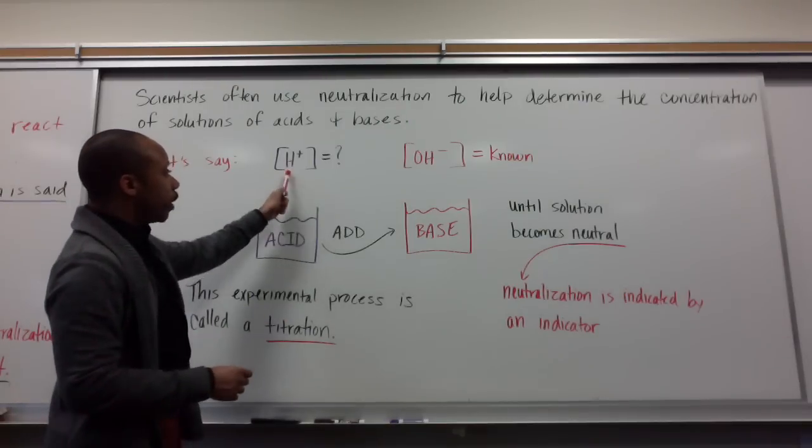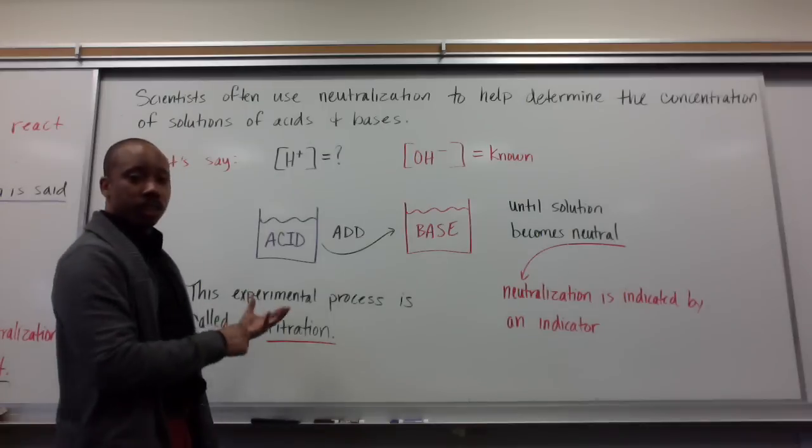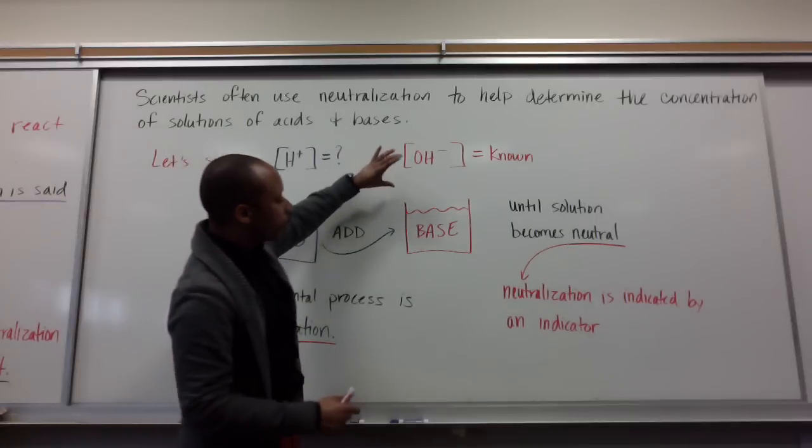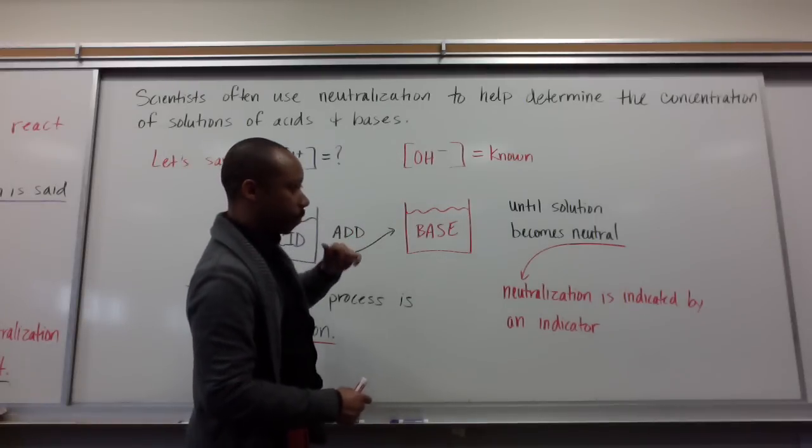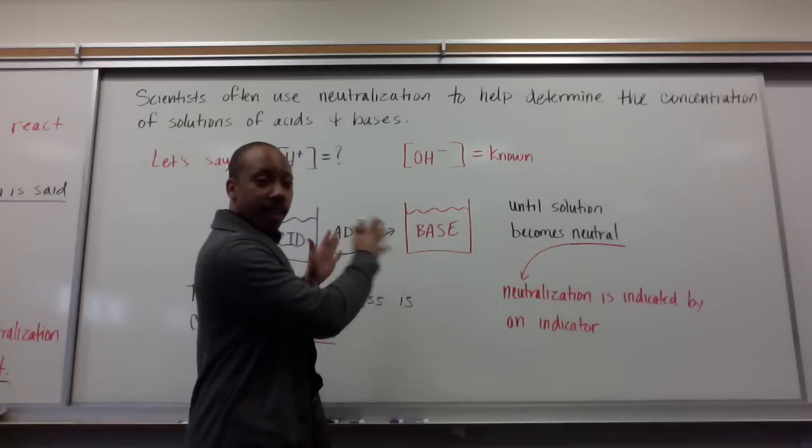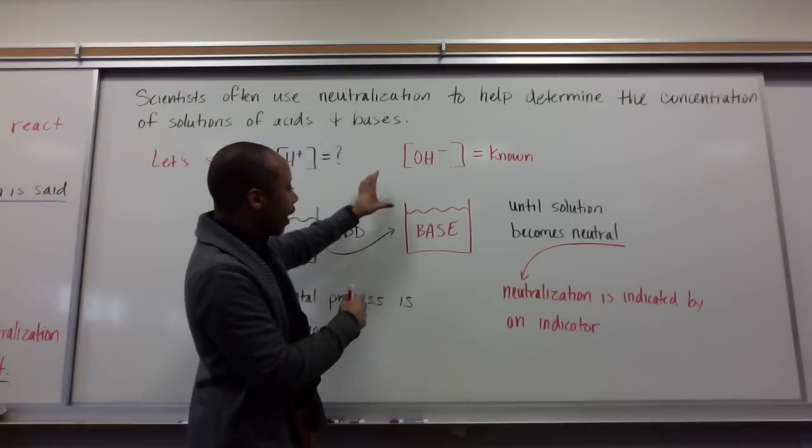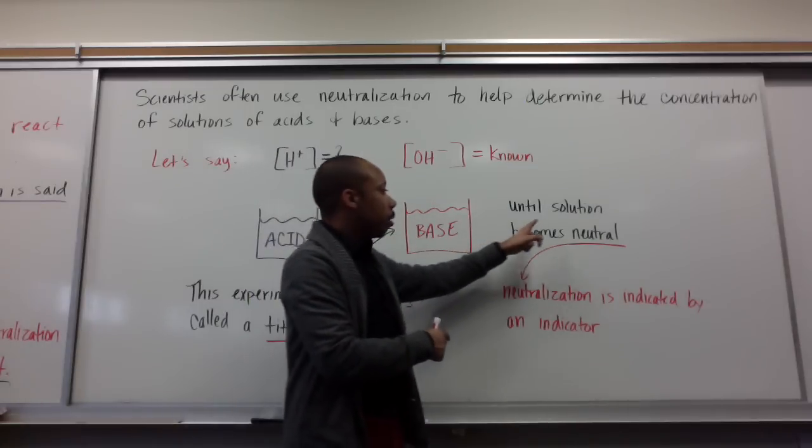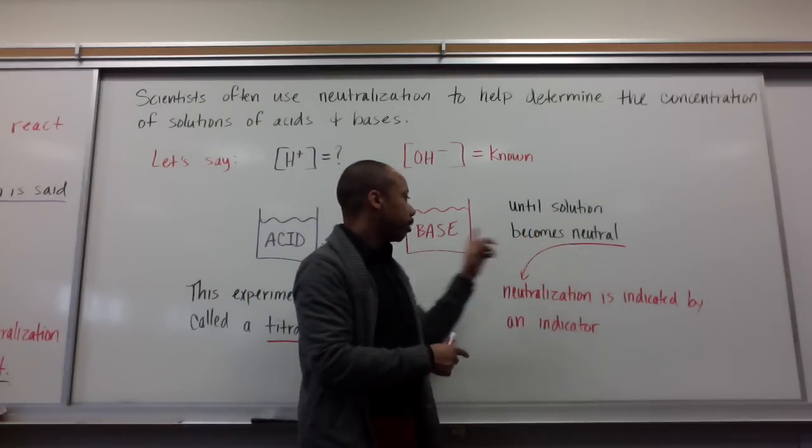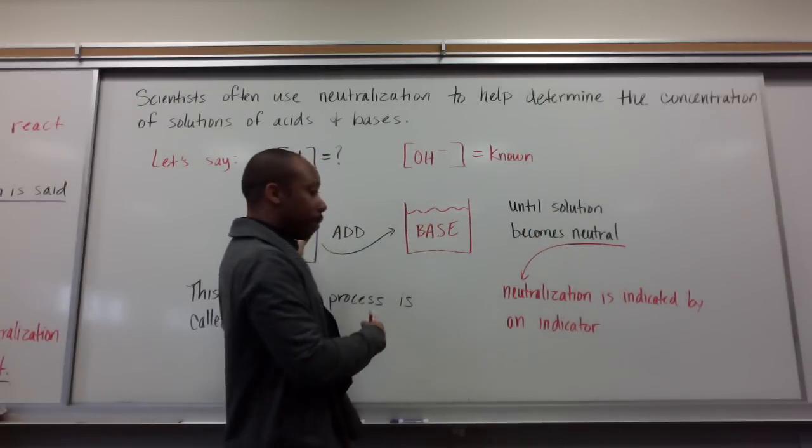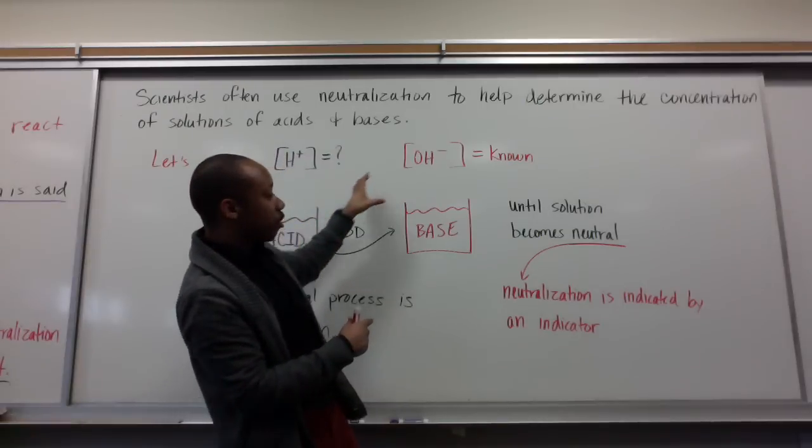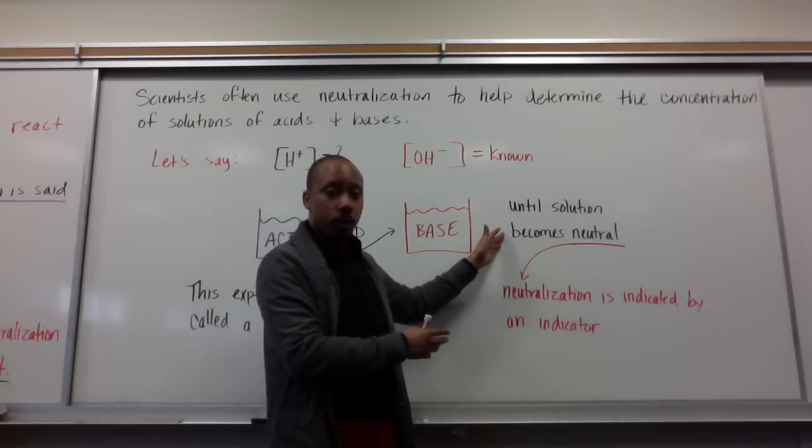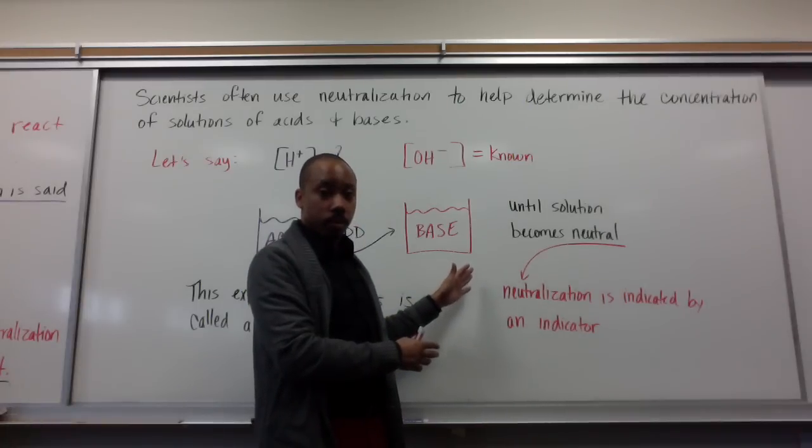So to figure this concentration out, I'm going to take my acid with unknown concentration and add it to my base. There's an indicator in here. I'm going to keep adding it to my base little by little until my solution becomes neutral. As I add my acid into my base, eventually I'm going to hit a point of neutrality, the neutralization point, the endpoint.